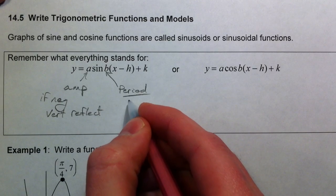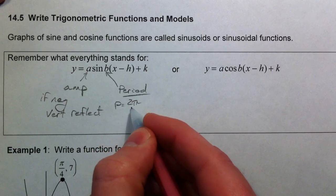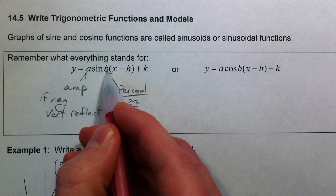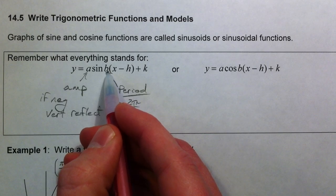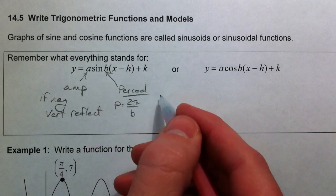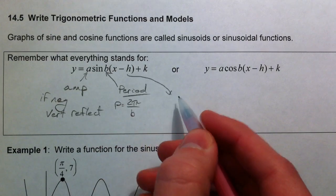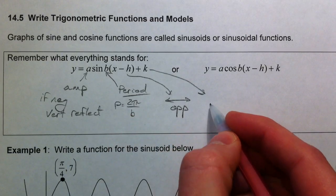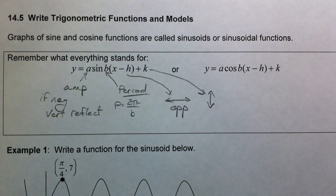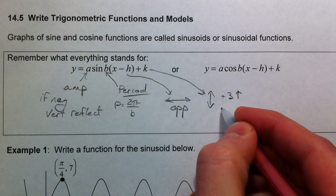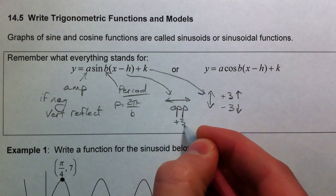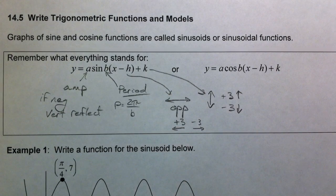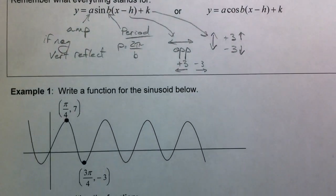This 'b' changes the period. It's not the period itself — the period is two pi divided by whatever b is, because it has the opposite effect since it's with the x. If b is two, the period is pi, not four pi. Horizontal movement is opposite; vertical movement is exactly how we think about it — plus three moves it up, minus three moves it down, plus three moves it to the left, minus three moves it to the right.